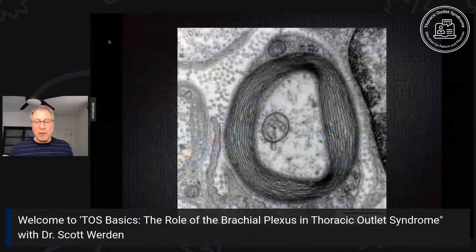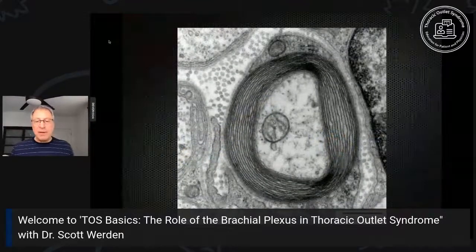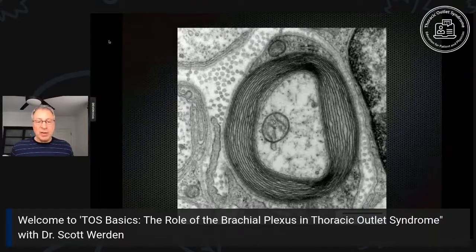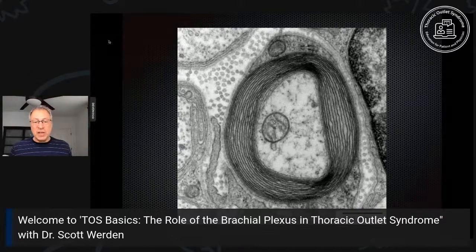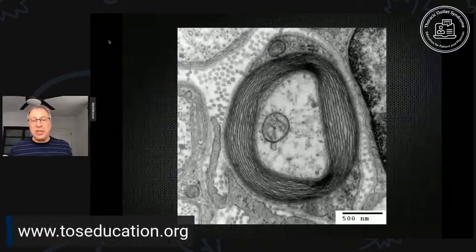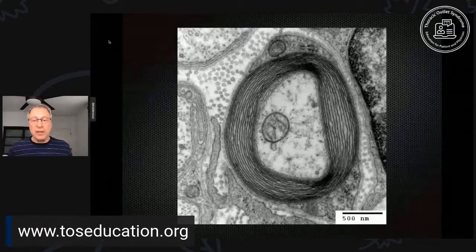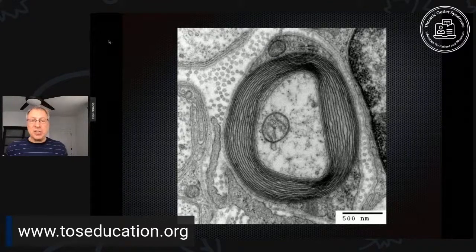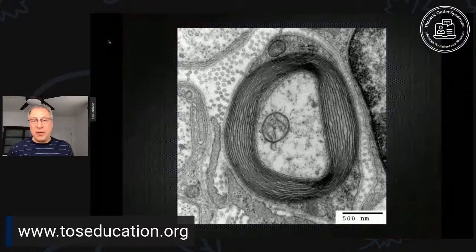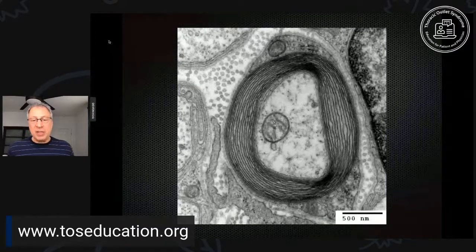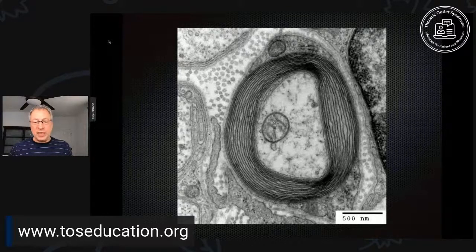This is a photomicrograph of a myelinated nerve — it's like you're cutting right through the middle of this cable. In the middle is the nerve cell — the axon — and around it you can hopefully see rings and rings of dark, very thin layers. That's myelin. At the very top you'll actually see the cell nucleus and cell body for the oligodendrocyte or Schwann cell that can make this type of insulation around the nerve.